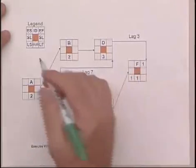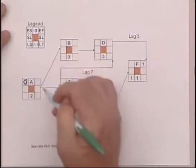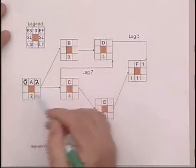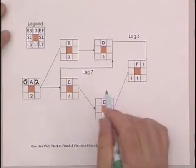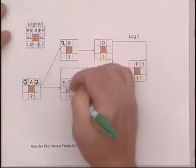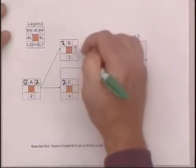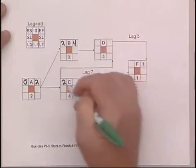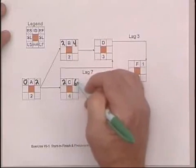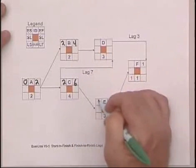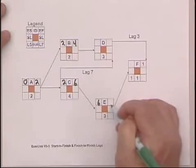So, again, we start with zero for the first activity. The earliest it could be completed if it's supposed to take two days is the second day. We can start both B and C. Two plus two is four. Two plus four is six. Then E can start. Six plus three is nine.